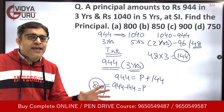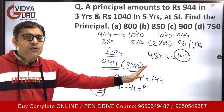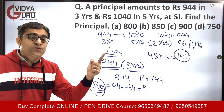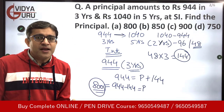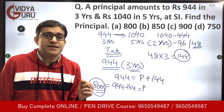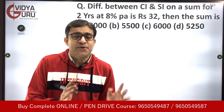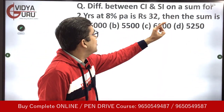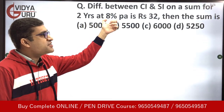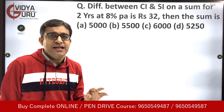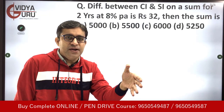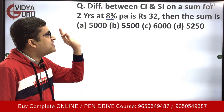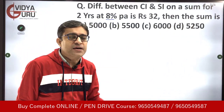A very simple, very logical way of solving the question without using any formulae or memorization. Now let's move to the next question and look at compound interest and compare how simple interest and compound interest are different. The question: difference between compound interest and simple interest on a sum for two years, invested at 8% per annum, is rupees 32. The rate of interest is 8%, the time is 2 years, and we have to find out the principal.